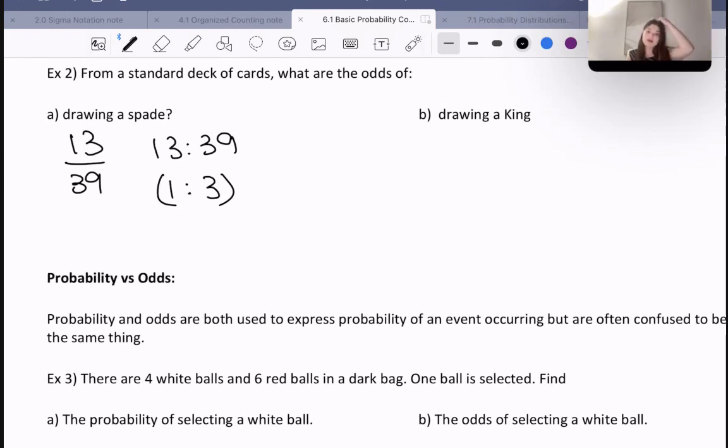What are the odds of drawing a king? King is one of the values of the cards, so there's four different kings: king of clubs, king of hearts, king of spades, and king of diamonds. How many non-kings are there? There's 52 cards total in a standard deck.